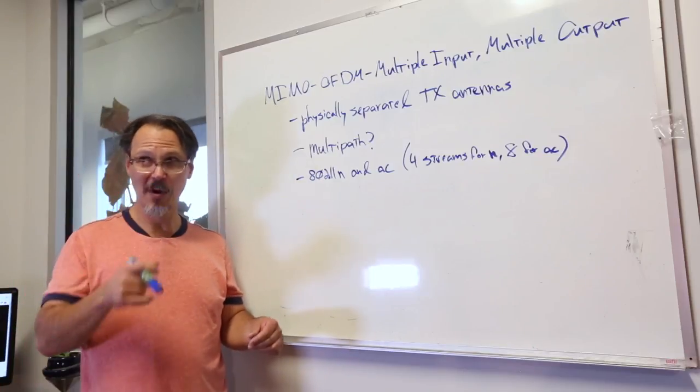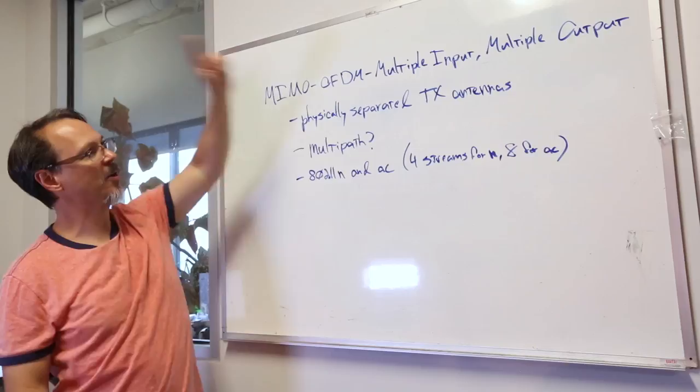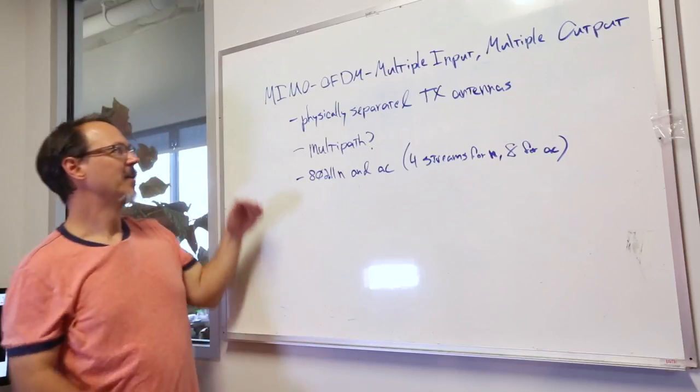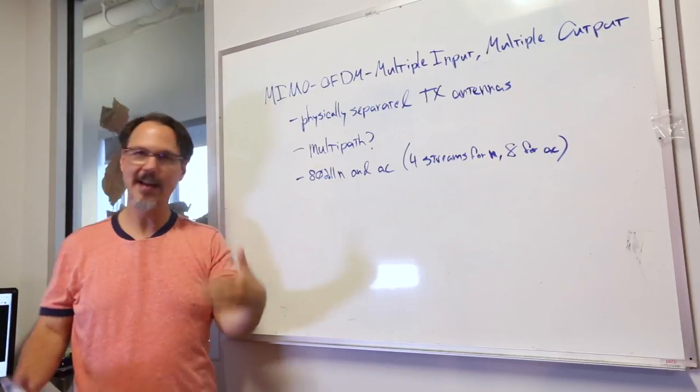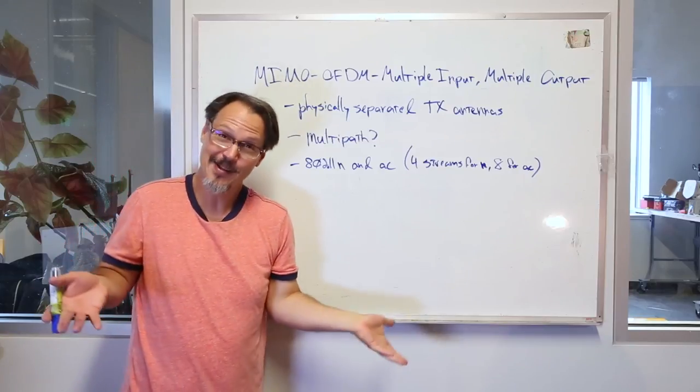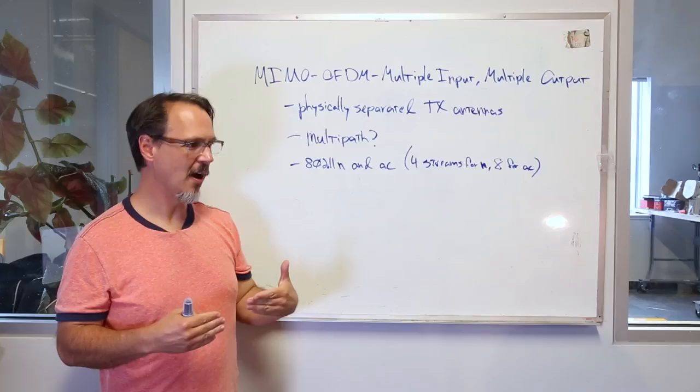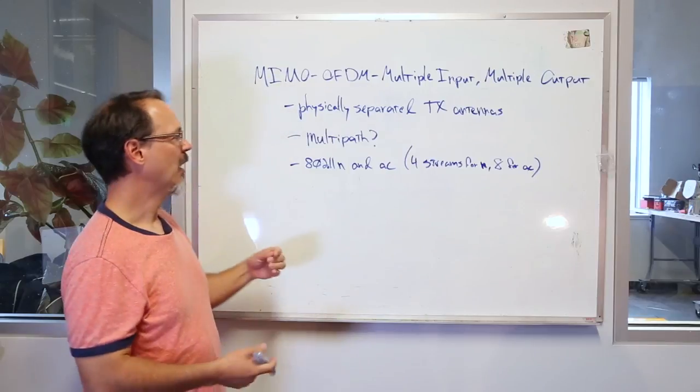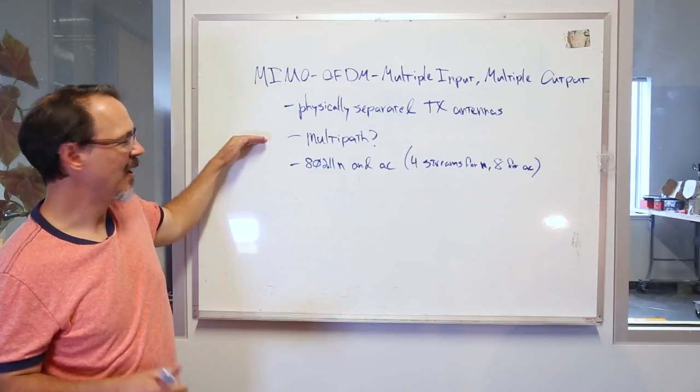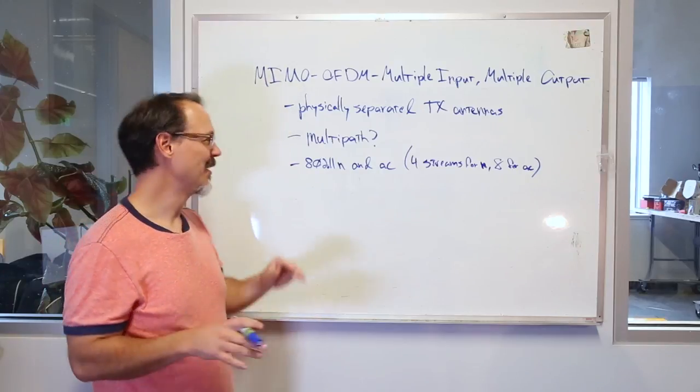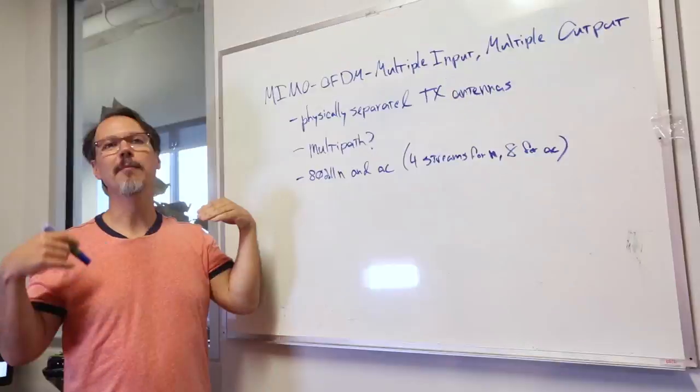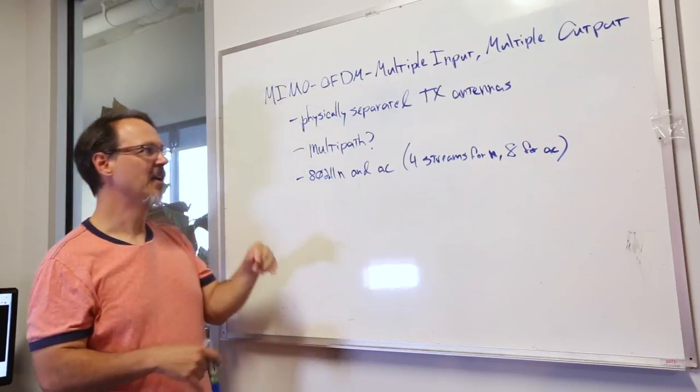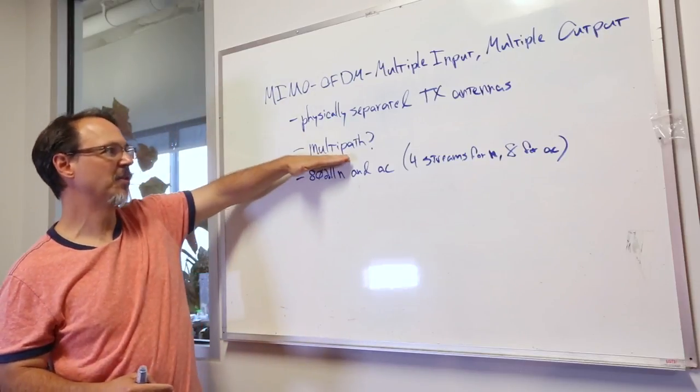Now the only other thing I want to talk about with regard to OFDM is to mention MIMO OFDM, which is multiple input to multiple output. The difference between regular OFDM and MIMO is that you have physically separated transmit antennas, and presumably that means physically separated transmitters as well. Each of those individual antennas handles one lower rate data stream. Now with this method, supposedly, and I won't lie to you I'm not sure how this works, but it utilizes multipath where in previous incarnations multipath is something to be dealt with. But MIMO OFDM is supposed to use multipath to its advantage.